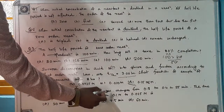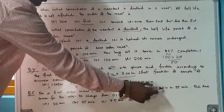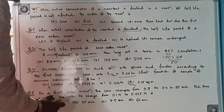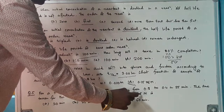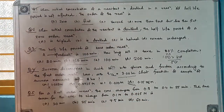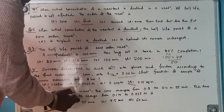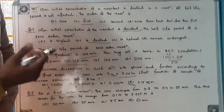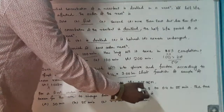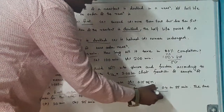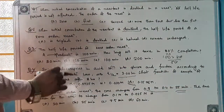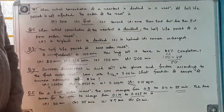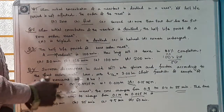Question 5: For a first-order reaction, the concentration changes from 0.8 to 0.4 in 25 minutes. Find the time taken for the concentration to change from 0.1 to 0.025. Since the concentration goes from 0.8 to 0.4, the half-life is 25 minutes.